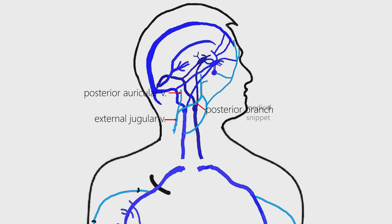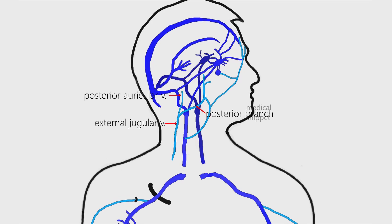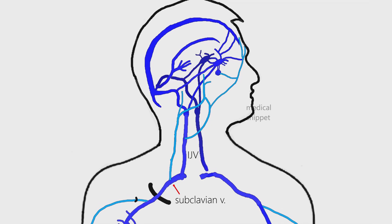The external jugular vein runs downward and drains into the subclavian vein. The internal jugular vein joins with the subclavian vein to form the brachiocephalic vein.